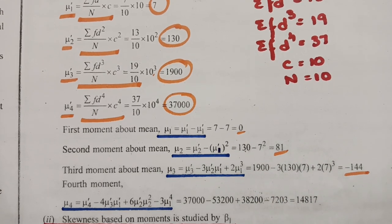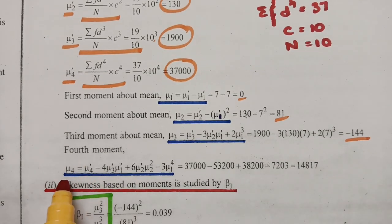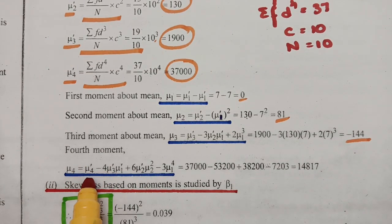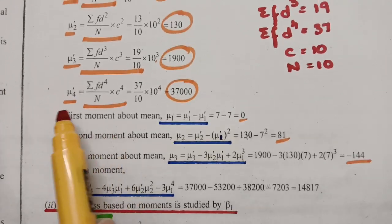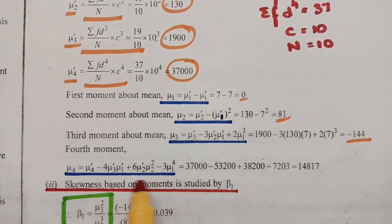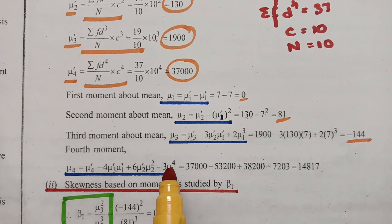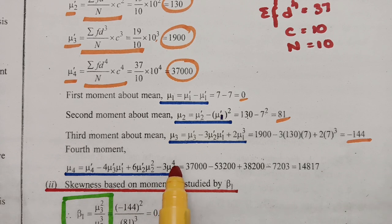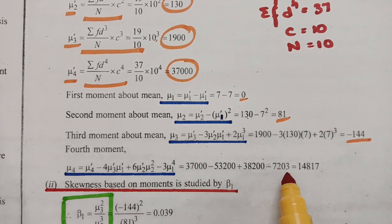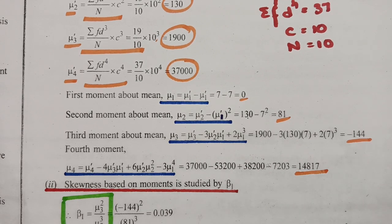The fourth central moment: μ₄ = μ₄' − 4μ₃'μ₁' + 6μ₂'(μ₁')² − 3(μ₁')⁴ = 37000 with the appropriate substitutions. After calculating using the formula, μ₄ = 14817. So the four central moments are μ₁ = 0, μ₂ = 81, μ₃ = −144, μ₄ = 14817.